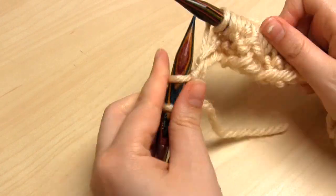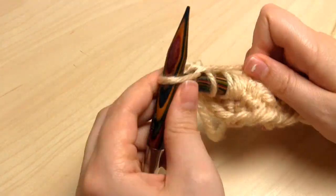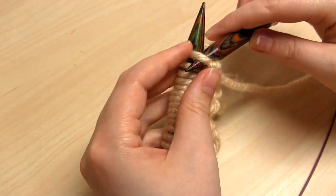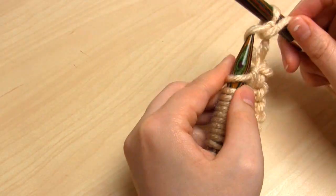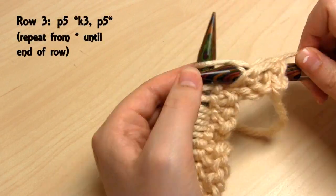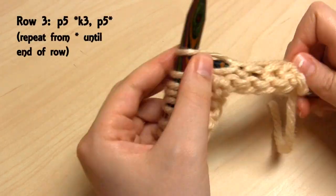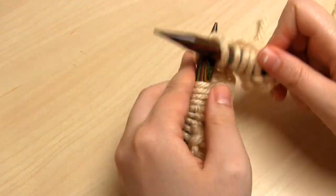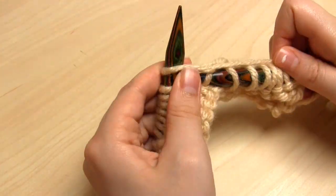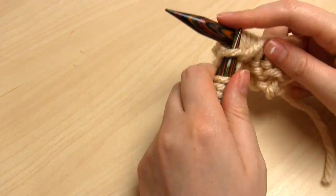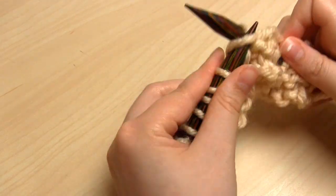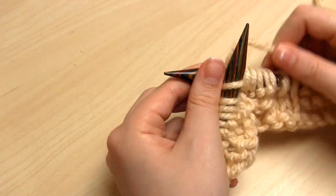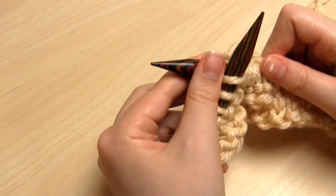To begin row 3, we are going to purl 5 stitches to start us off. So with the yarn towards the front we purl 5 stitches. Then the yarn goes towards the back to do 3 knit stitches. Then bring the yarn forward for 5 purl stitches again. And then you repeat 3 knit stitches, 5 purl stitches, 3 knit stitches, 5 purl stitches, until the end of the row.